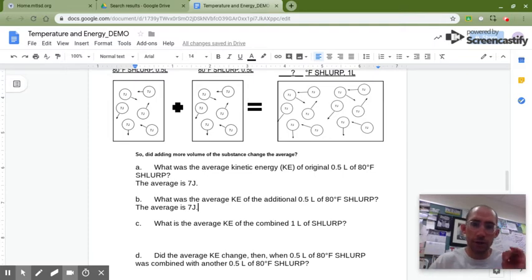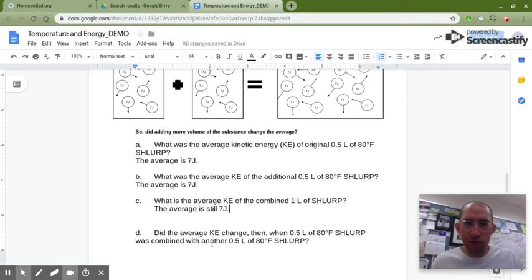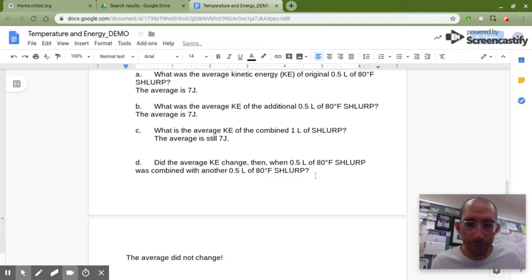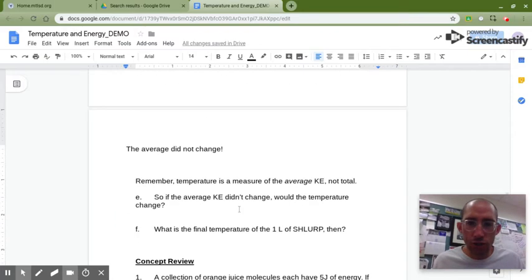Combine these two volumes together, each molecule still has seven joules of kinetic energy, so the average is still seven. So did the average change? Well, no. Average is seven, average is seven. Put them together, the average is still seven. So if the average didn't change, then the temperature didn't change, because the temperature is a measure of the average.